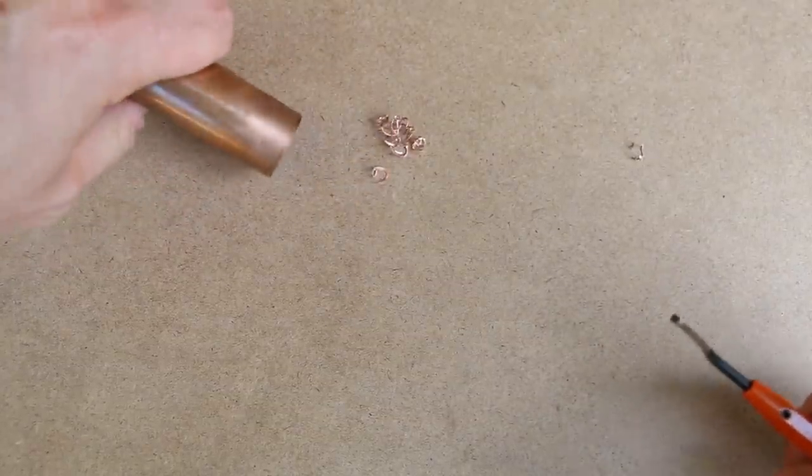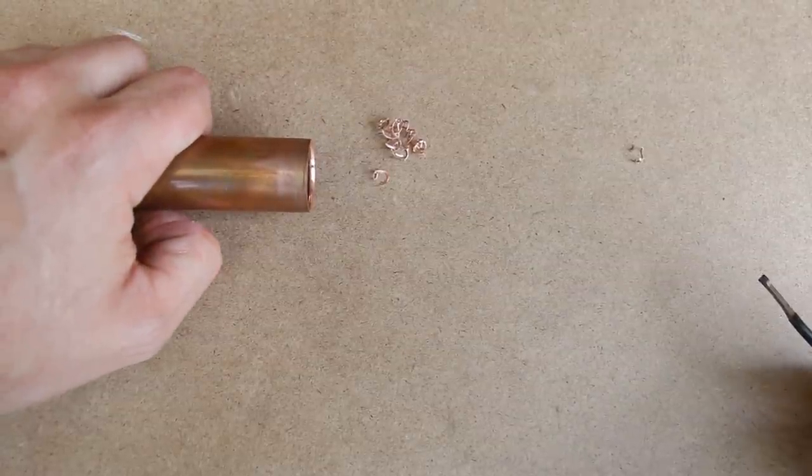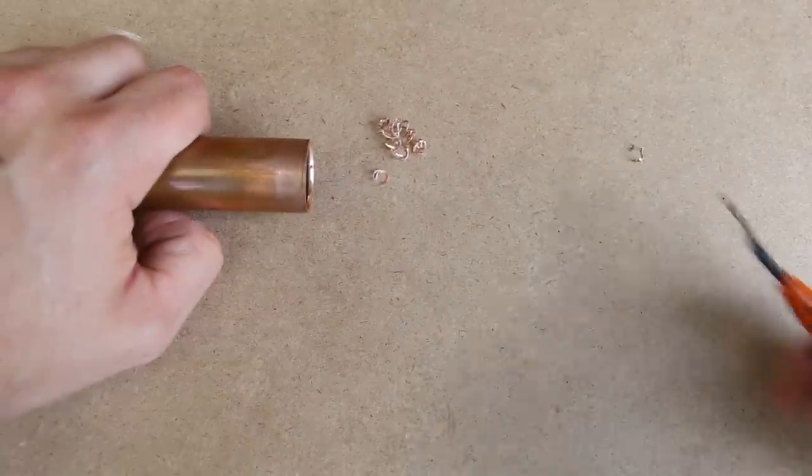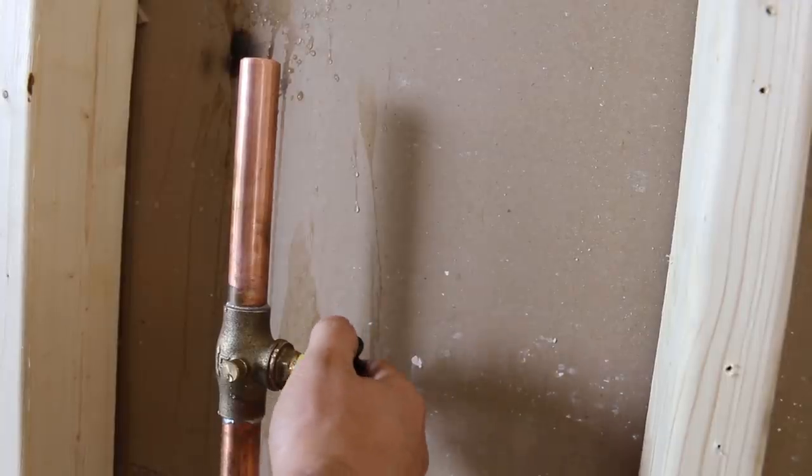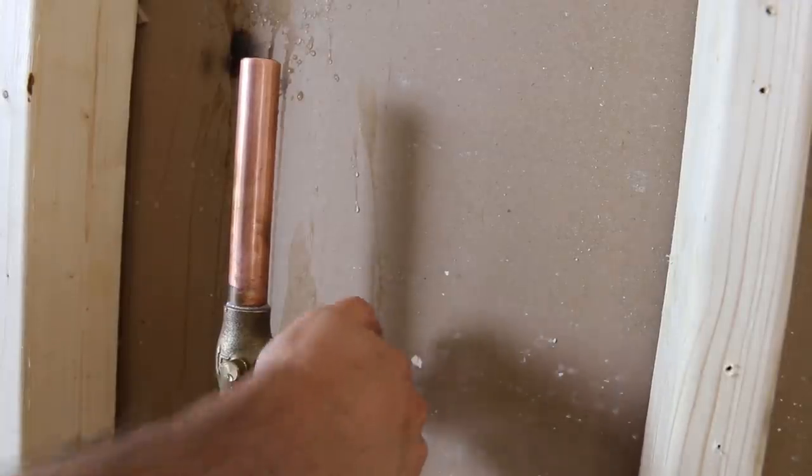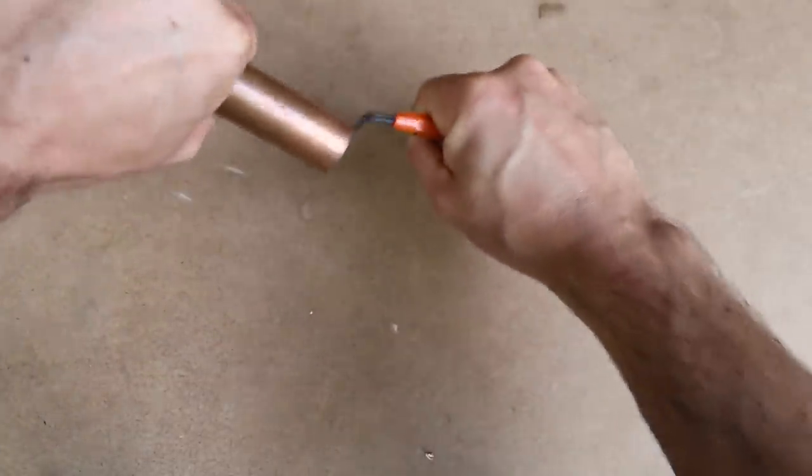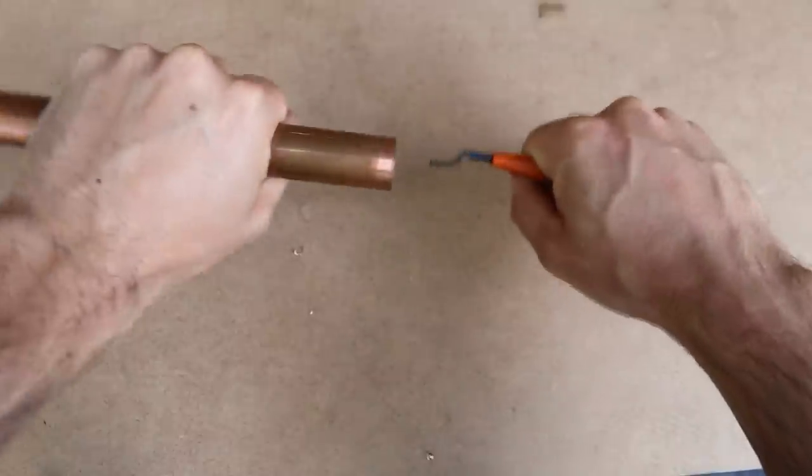Also, you want to make sure that the shavings aren't going inside the pipe you're deburring, because they could clog small orifices. So always purge your lines once you're done, or better yet, if you can, deburr the pipe upside down so the filings fall out and don't go in the system.